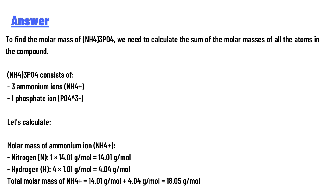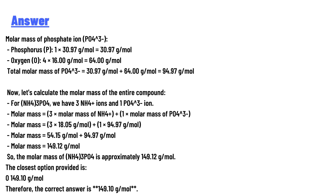Let's calculate the molar mass of the ammonium ion NH₄⁺. Nitrogen: 1 × 14.01 g/mol = 14.01 g/mol. Hydrogen: 4 × 1.01 g/mol = 4.04 g/mol. Total molar mass of NH₄⁺ = 14.01 + 4.04 = 18.05 g/mol.